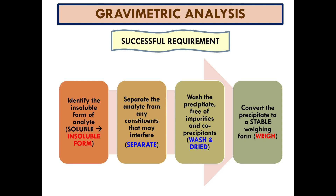The next successful requirement for gravimetry analysis is to separate the analyte from any constituent that may interfere — we separate the analyte from any impurities that disturb the analysis. Then we wash the precipitate free of impurities using cold precipitate — we wash and dry the precipitate. The last requirement is to convert the precipitate to a stable weighing form, which is then weighed.